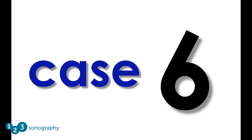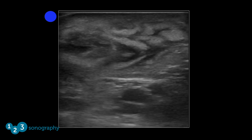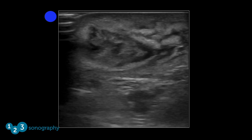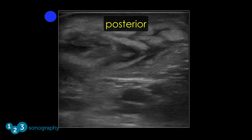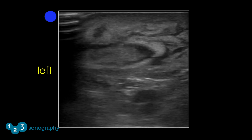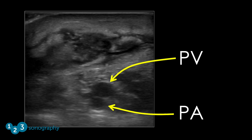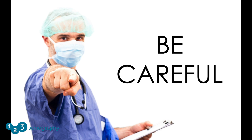Case number six: a 45-year-old female with increasing pain and swelling in her popliteal fossa. Her past medical history is remarkable for COPD, and she is currently taking oral steroids for a recent exacerbation. An axial view through the mass in the popliteal fossa — with the transducer on the posterior surface of the knee, the top of the screen is posterior and the orientation marker is directed to the patient's left. The examination reveals a complex mass consistent with an abscess. The popliteal artery and vein can be seen at the bottom of the image. Be careful about draining this abscess.